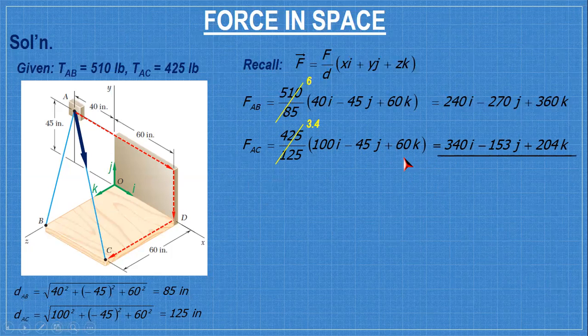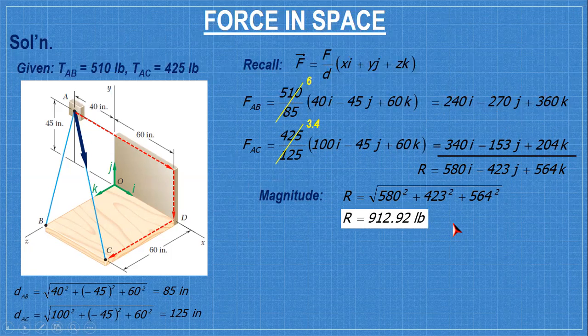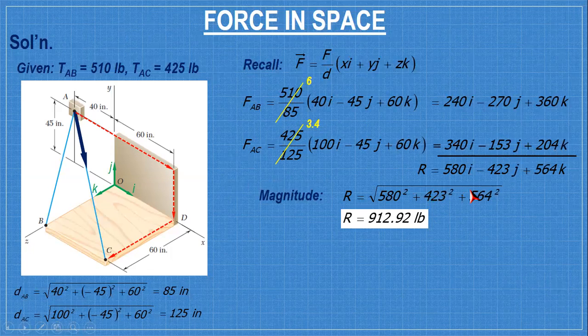So to get the magnitude, add them. 580, negative 423, positive 564. These are the components of the resultant. So this is Rx, Ry and then Rz. So to get the magnitude, square root of the squares. Even if negative, when you square it becomes positive, same with this, even if negative 423, when squared it becomes positive.